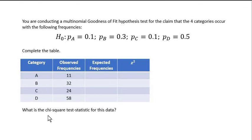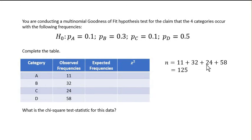A, B, C, and D. So what we're trying to do is we're trying to figure out what the expected frequencies would be if these proportions are actually accurate. So what we want to do first is we want to figure out how many observations there are total in the sample. So we just add up all of the frequencies, 11 plus 32 plus 24 plus 58 gives us 125.